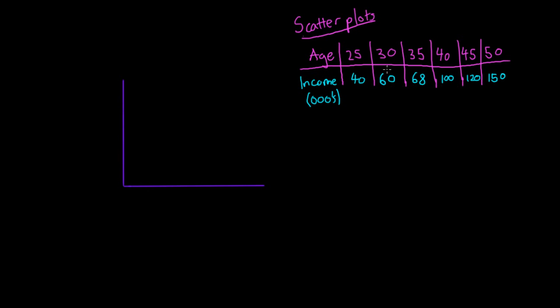The first thing we need to do before we can make our scatterplot is work out our independent and dependent variables. We need to work out which one depends on the other.